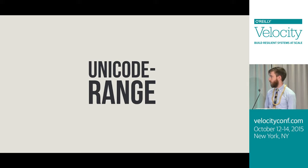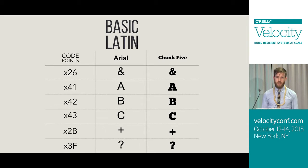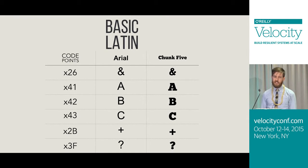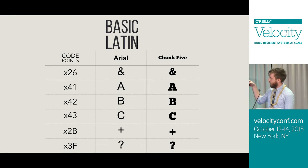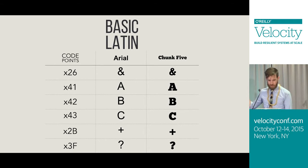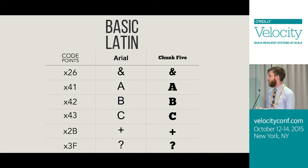Unicode Range allows us to declare what characters we want the font to download on. Fonts are made up of a list of code points — for example, U+0026 is ampersand, U+002B is plus sign, and U+003F is question mark. This allows us to use the same fonts without remapping when we change a font.